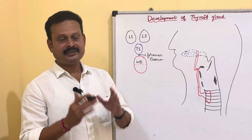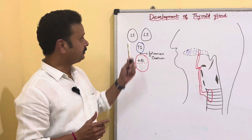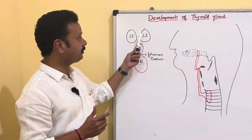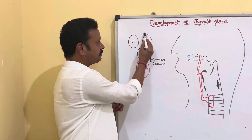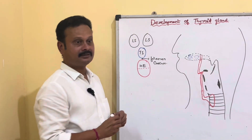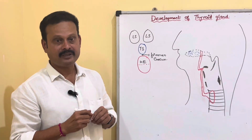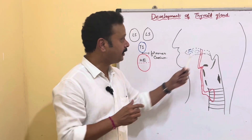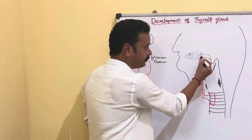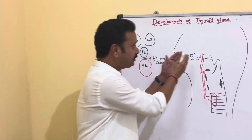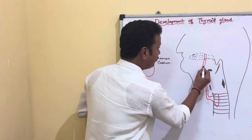Before the actual fusion of the rudiments of the tongue — the two lingual swellings and tuberculum impar — the endodermal cells dorsal to these three swellings evaginate and form a surface elevation of the median thyroid rudiment. From there, these endodermal cells proliferate caudally through the substance of the tongue and form the thyroglossal duct.